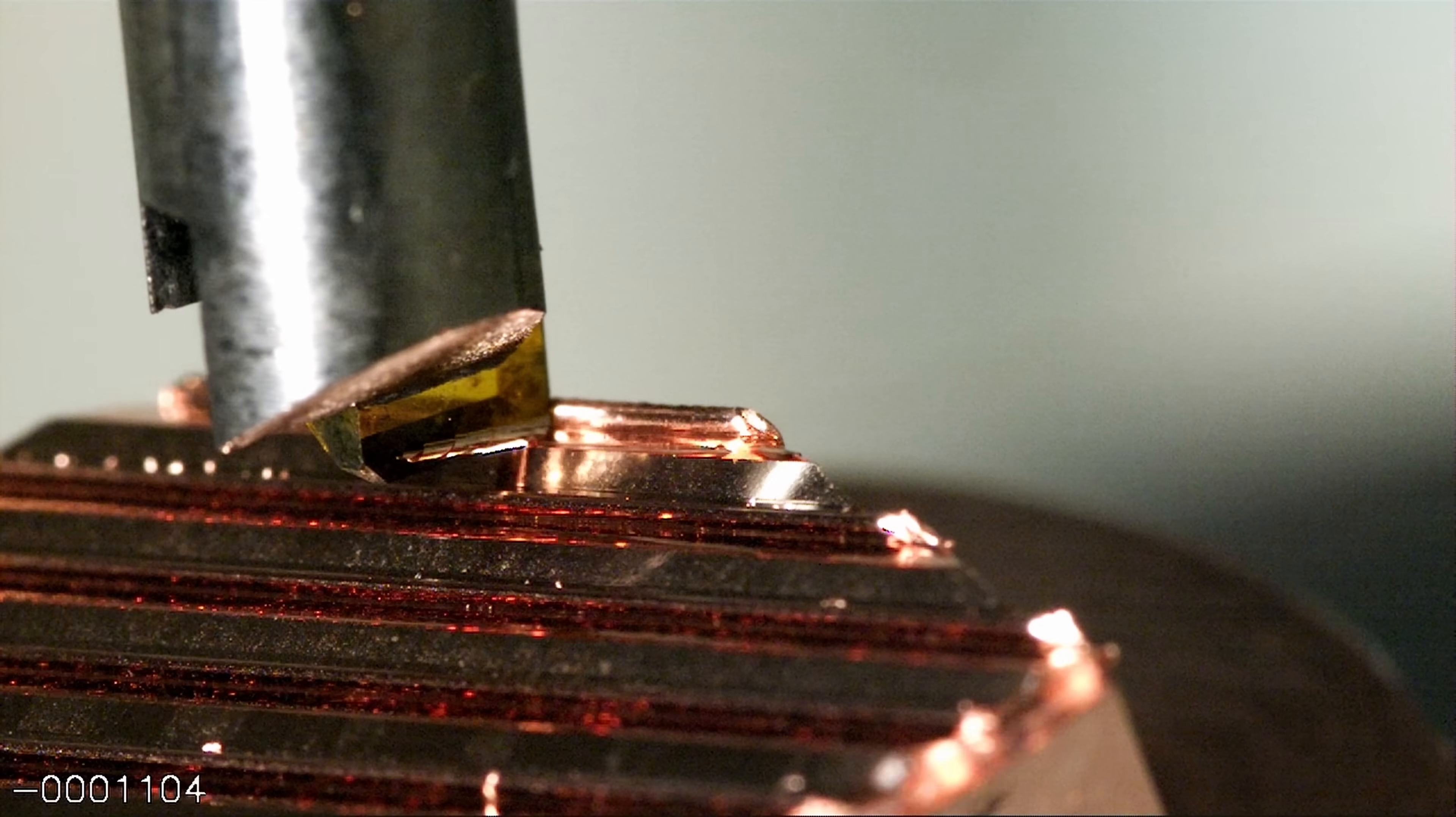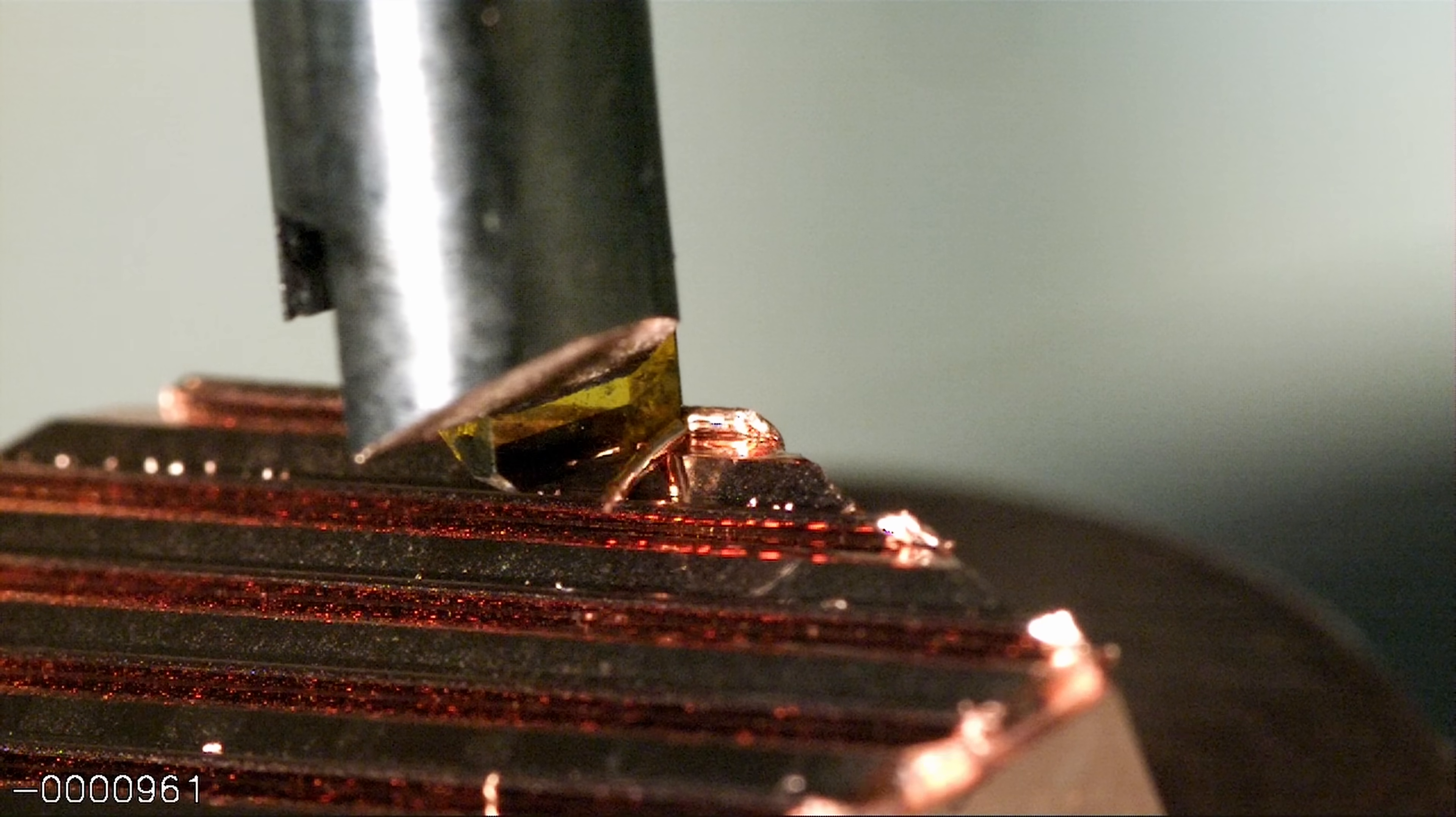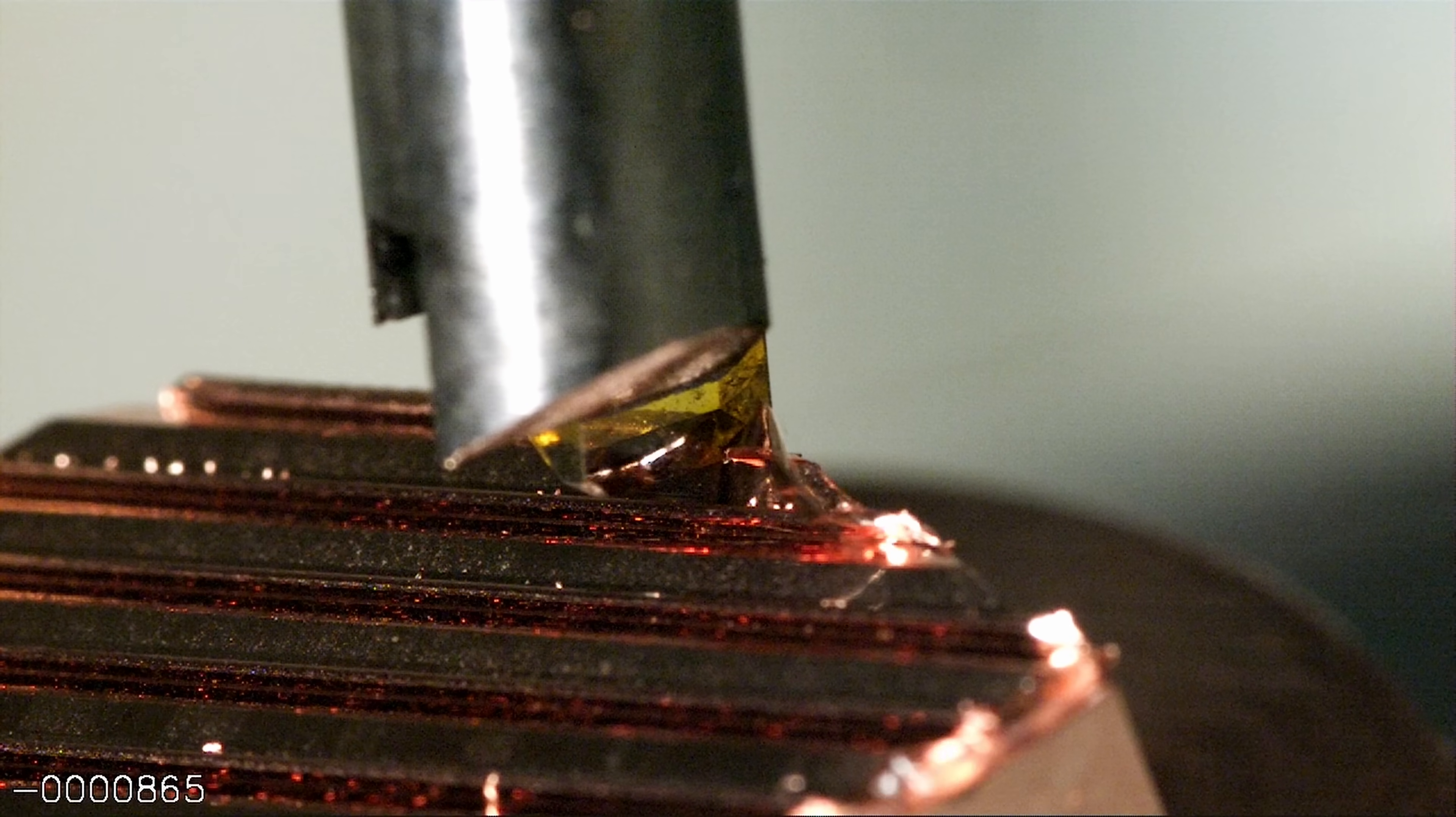You're watching a monocrystalline diamond cut high-purity copper in slow motion. The little chip that's peeling off right there is only about 4 microns thick.